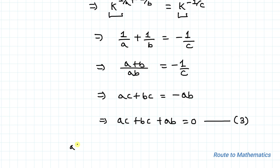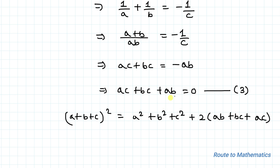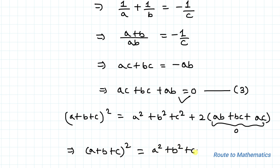We know the algebraic identity: (a plus b plus c) squared equals a squared plus b squared plus c squared plus 2(ab plus bc plus ac). From equation 3, the term (ab plus bc plus ac) equals 0, so we can write (a plus b plus c) squared equals a squared plus b squared plus c squared. Let's call this equation 4.